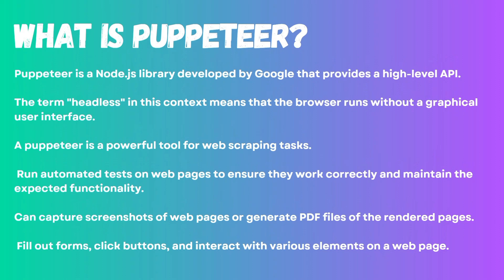Puppeteer is a Node.js library developed by Google that provides a high-level API to control and automate a headless version of a popular web browser, primarily Google Chrome. It allows developers to interact with web pages, simulate user actions, and extract data programmatically.